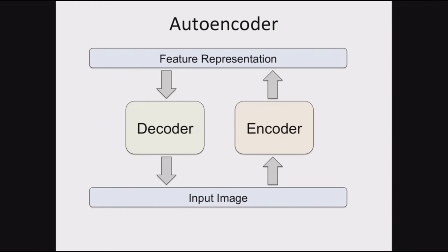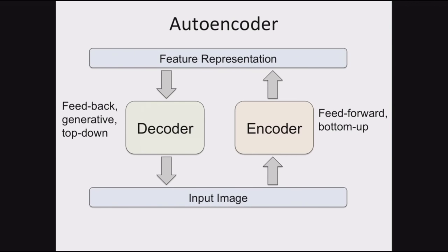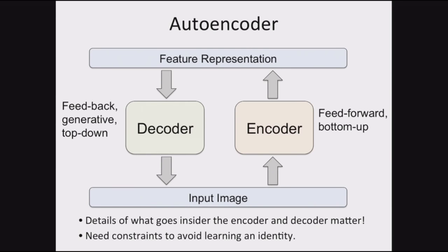That flows naturally into the ideas of autoencoders. The autoencoder is a general framework: given an input image, you encode it to get some feature representation, then a decoder takes that representation and decodes it back into the image. You can think of the encoder as a feedforward bottom-up pass — much like in a convolutional neural network — and the decoder as a feedback generative top-down pass, reconstructing the input. The details inside the encoder and decoder matter a lot, and you need constraints to avoid learning an identity mapping.